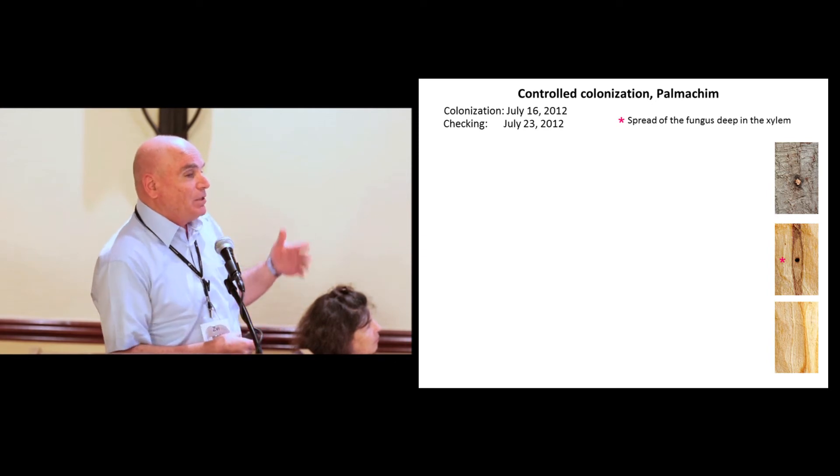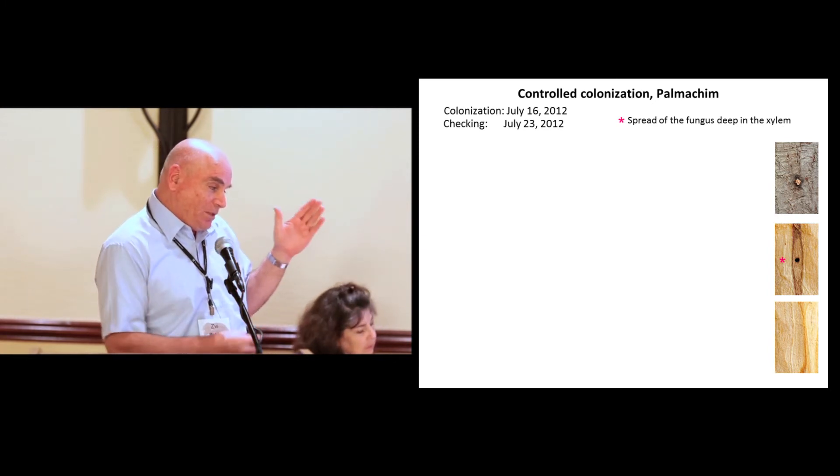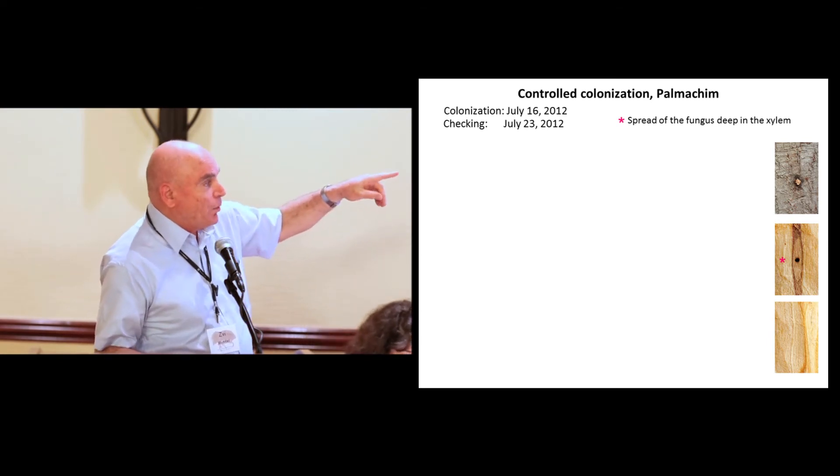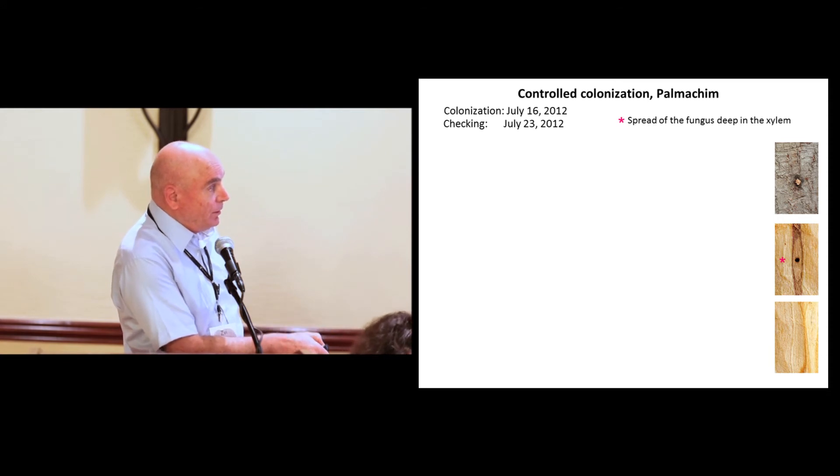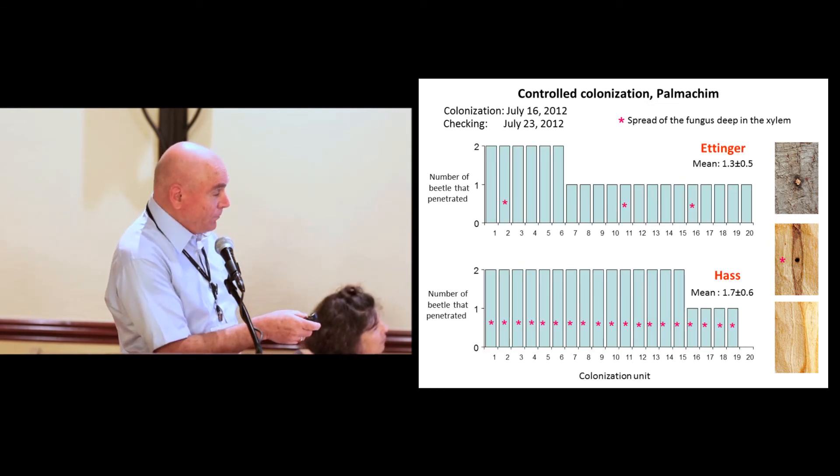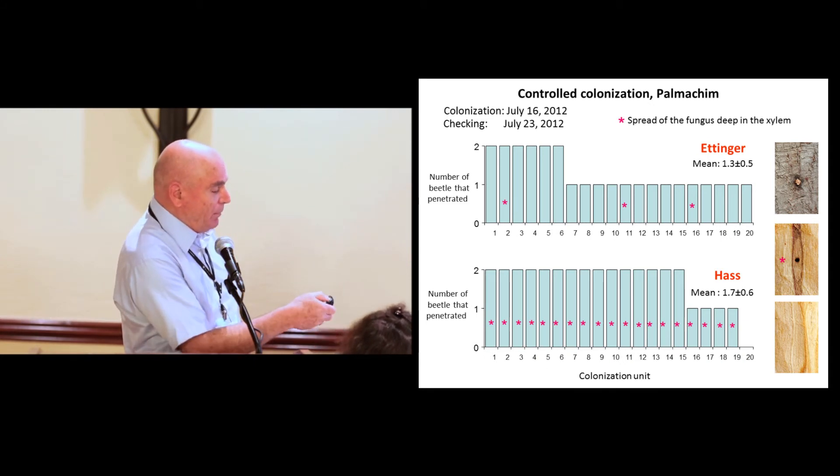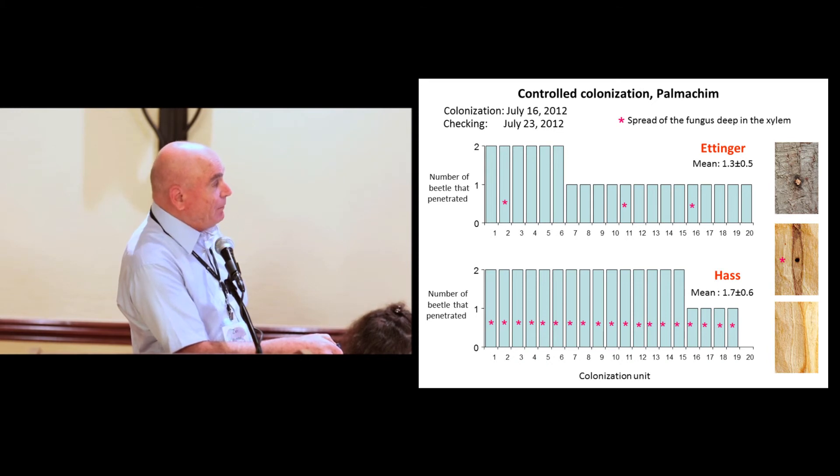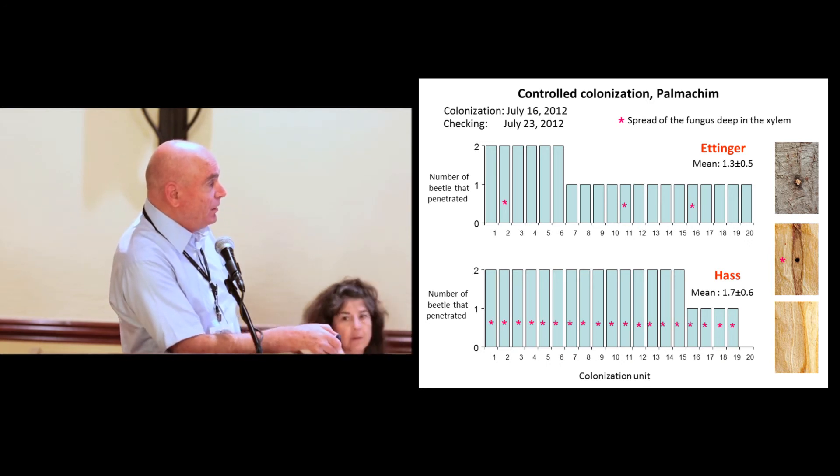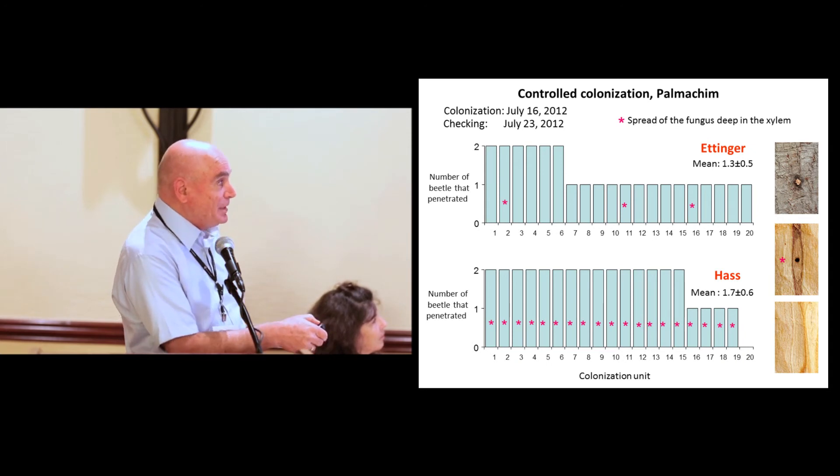And then, after we saw the symptom, we checked the wood. What is important for us in this particular case is to measure the level of penetration and the establishment and spread of the fungus inside. So this is the penetration point, this is the spread of the fungus, and in this case, you don't see any spread of the fungus. We compared what we consider susceptible variety, the Hass, to Ettinger. And what you can see here is the Hass below and Ettinger above. You can see that the beetle managed to penetrate and establish itself in Ettinger and Hass. But if you consider the number of cases the fungus established, you see that in all cases of Hass, the fungus established. But only in three cases, the fungus managed to establish in Ettinger.